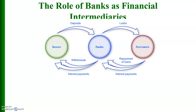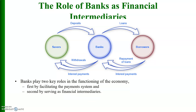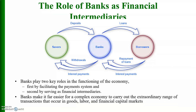How buyers and savers are interconnected through banks: savers deposit money in the bank; banks provide loans to borrowers; borrowers repay loans along with interest; and savers can withdraw money from the bank. Banks play two key roles in the economy: first, by facilitating the payment system, and second, by serving as financial intermediaries. Banks also make it far easier for a complex economy to carry out transactions in goods, labor, and financial capital markets, and they lower transaction costs.